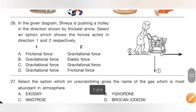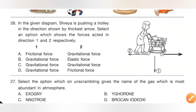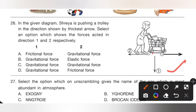Question 26: In the given diagram, Shreya is pushing a trolley. Select the option showing the forces acting in directions 1 and 2 respectively. Gravitational force is the force of attraction that pulls everything towards the earth, so direction 1 is gravitational force. Frictional force is a force which opposes motion and stops moving things, so direction 2 is frictional force. Option D is the correct answer.